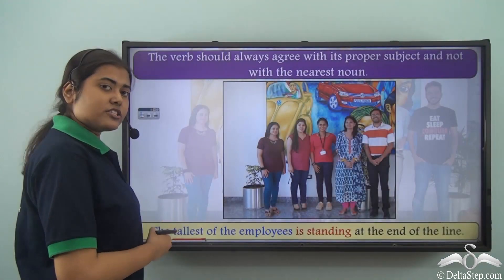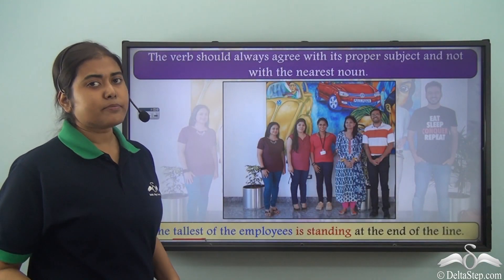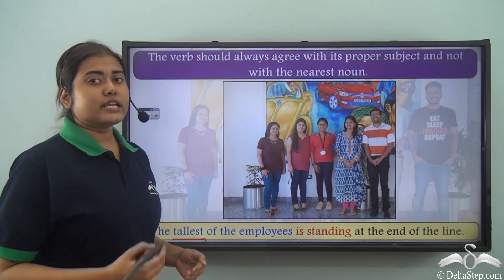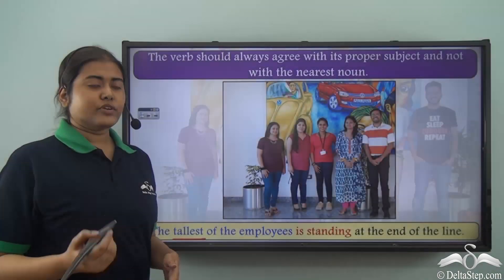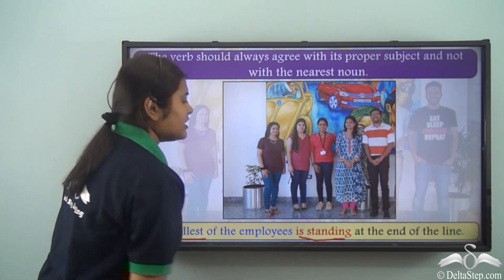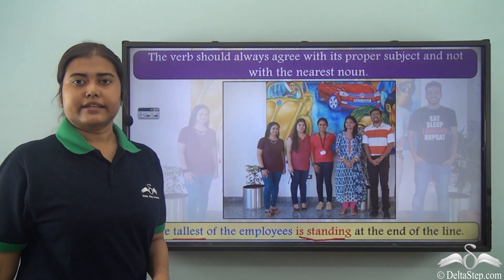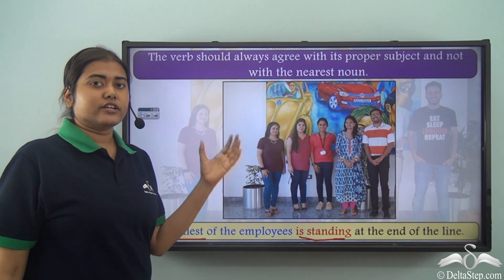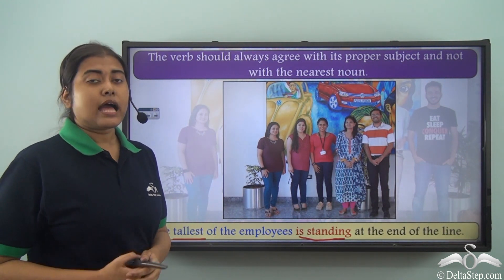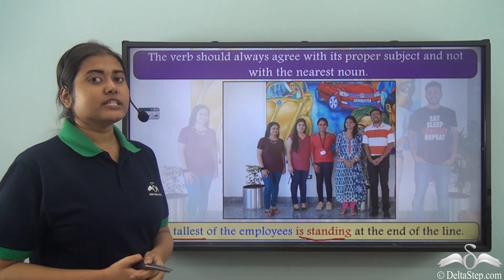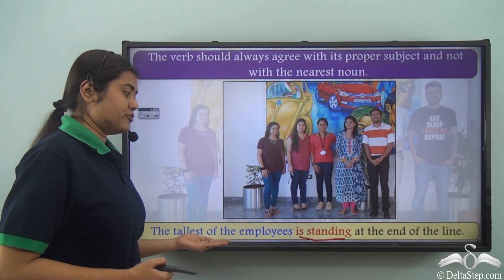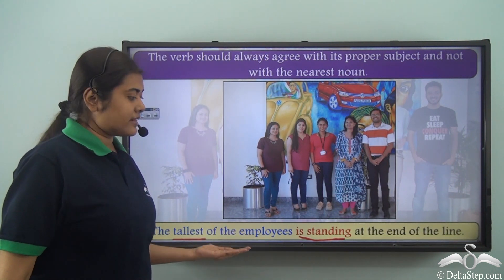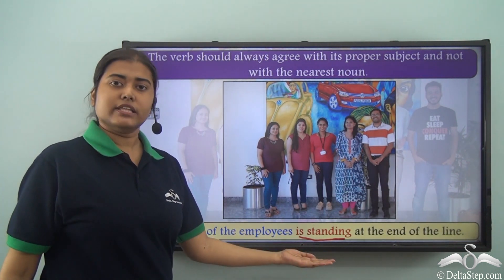Because 'the tallest of the employees' refers to one person, a singular subject needs a singular verb — so we need 'is standing.' The verb should agree with the proper subject and not with the nearest noun. You need to read the sentence carefully, understand the proper subject, and then decide on the verb.